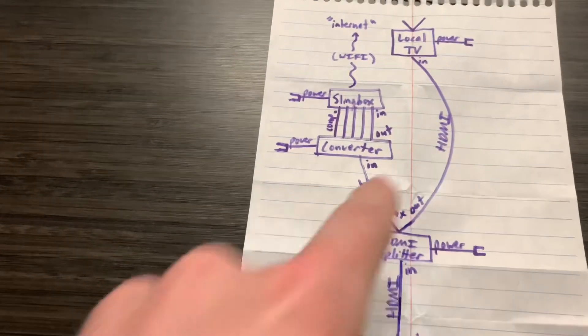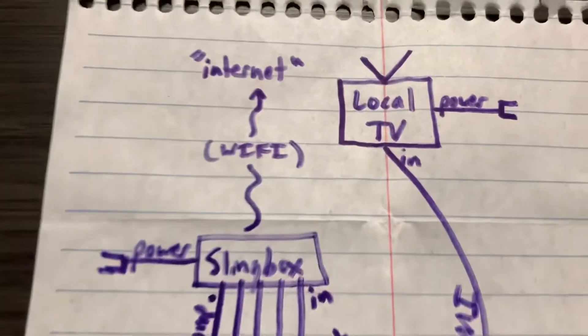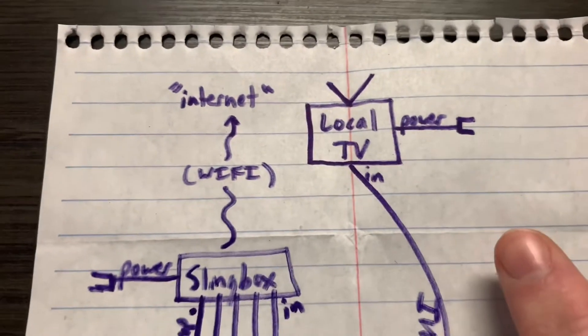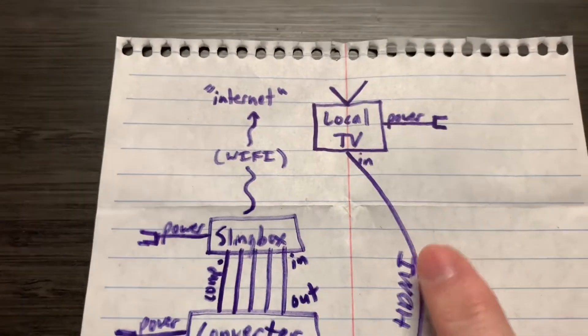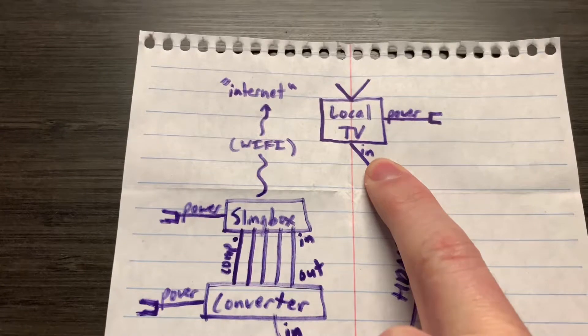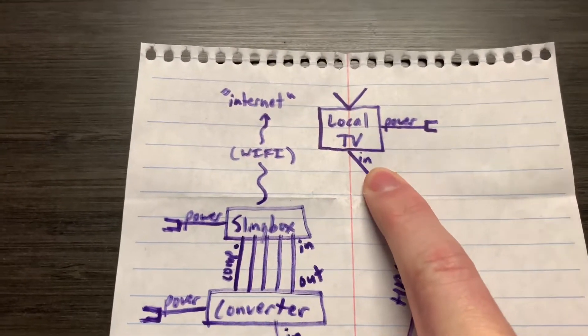One's going to go in another HDMI cable to your TV, which is going to be plugged into the power. That's your local TV. And it's going to be the in HDMI on your local TV.